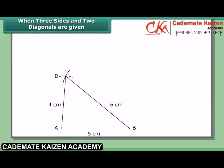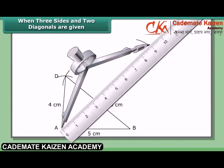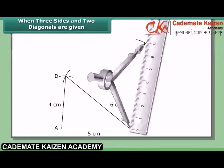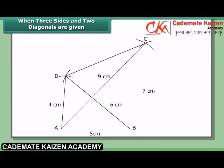Join AD and BD. With A and B as centers and radii 9 cm and 7 cm respectively, draw arcs to cut each other at C. Join AC and BC. Also join DC. Then ABCD is the required quadrilateral.